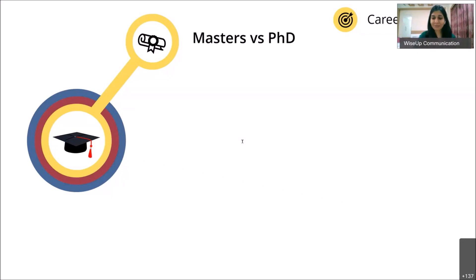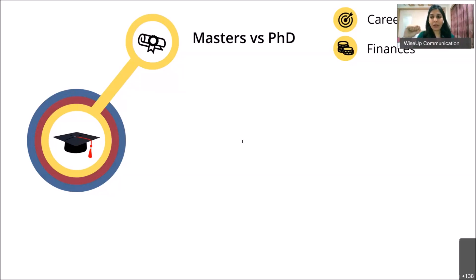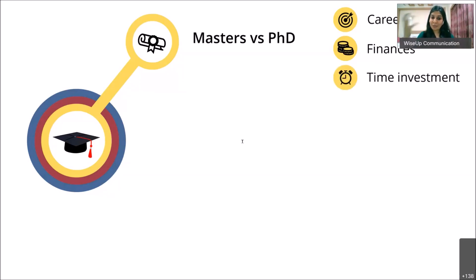Think carefully about your career goals before choosing between masters or PhD. Another thing to consider is finances. For a masters without scholarship, the minimum you should expect to spend is around 30 lakhs, including living expenses — it can be more. For a PhD, it usually comes with a stipend of about $2,000 US dollars per month plus a tuition fee waiver, so the financial investment is almost nothing.